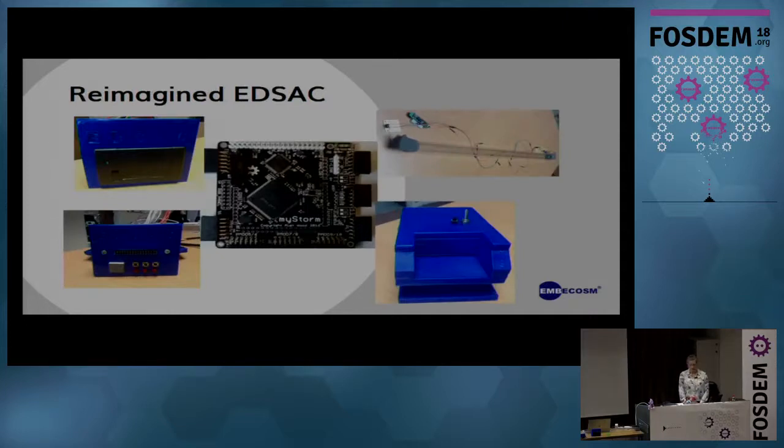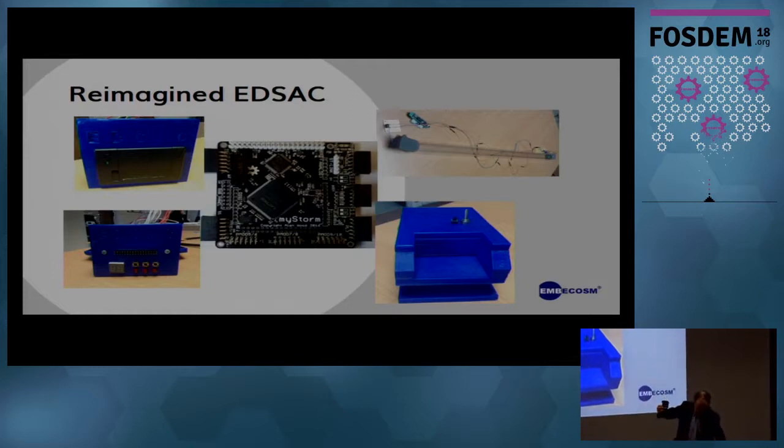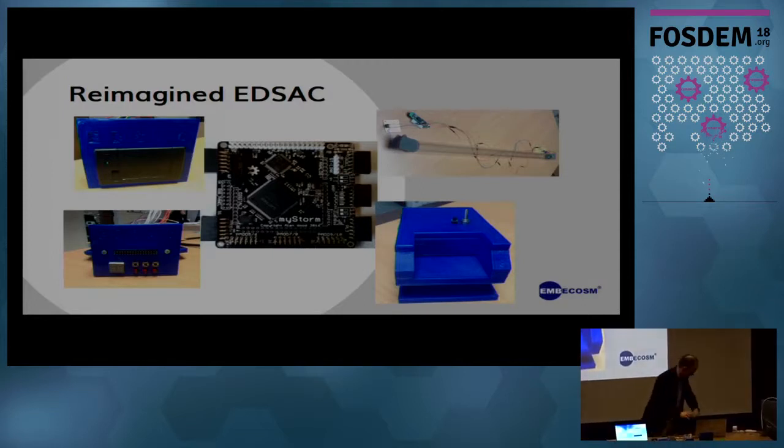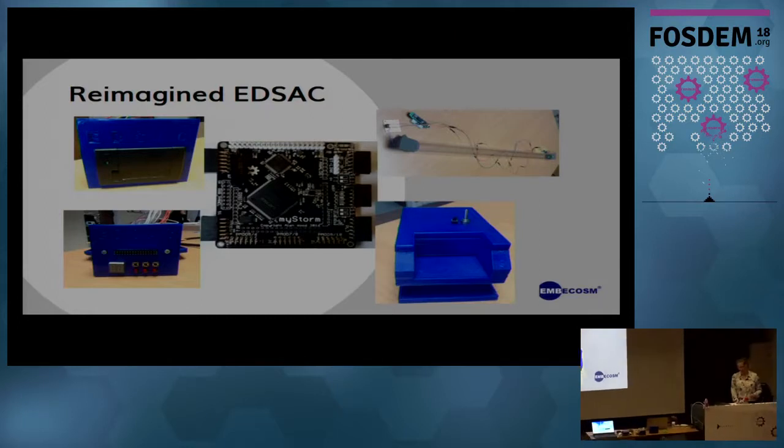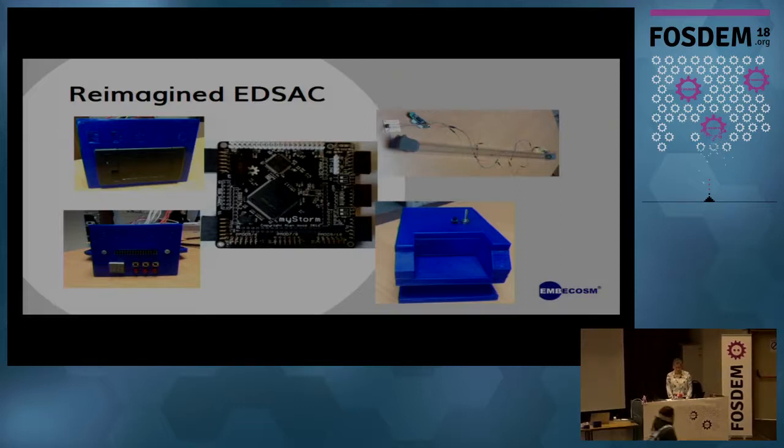There are many software simulators of EDSAC, but none capture the physical nature of early computing. We have reimagined EDSAC using a modern FPGA for the processor, and 3D printing, discrete electronics, and Arduinos for the delay line and three key peripherals. Everything is open source and we have aimed to keep the cost of design low to make the project accessible for schools. In this talk I am going to look in more detail at the use of FPGA boards for the main EDSAC logic, one of the peripherals the paper tape reader, and the delay line used for memory. This is a work in progress currently based on the original 1949 version of EDSAC. We welcome all contributions to extend our work.